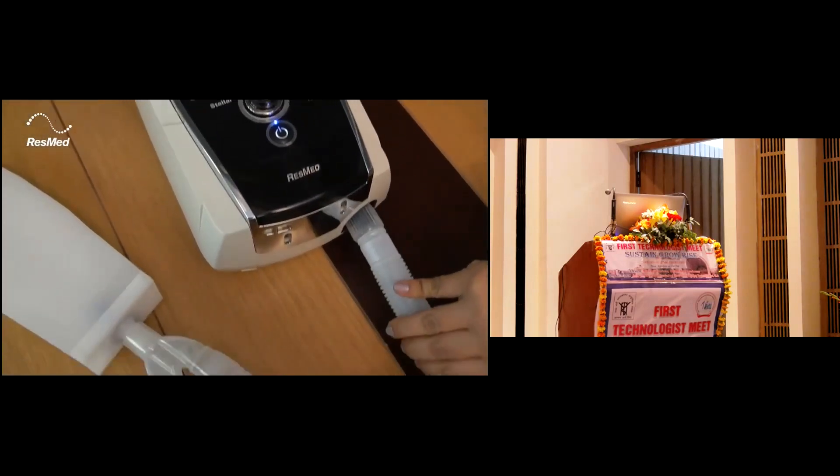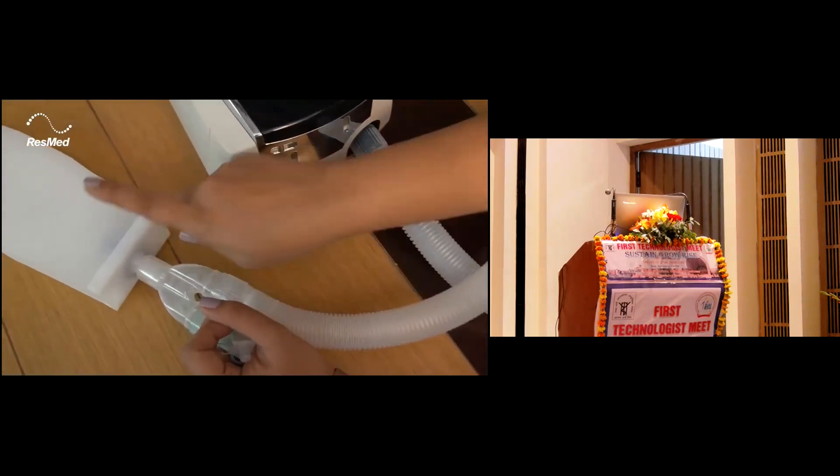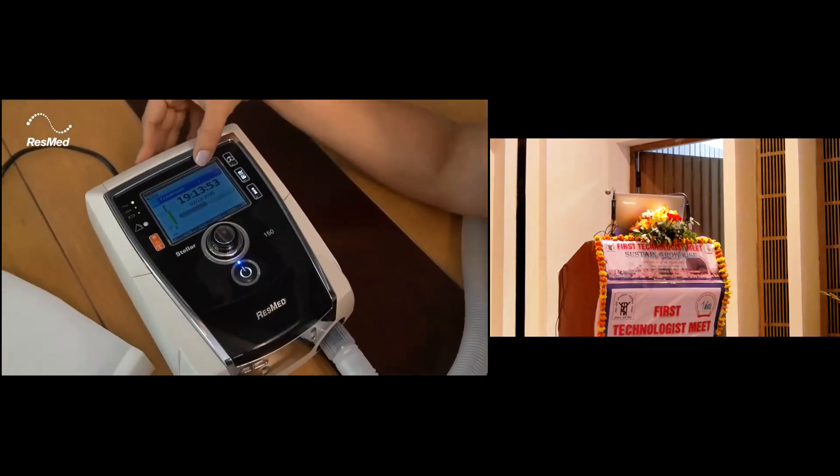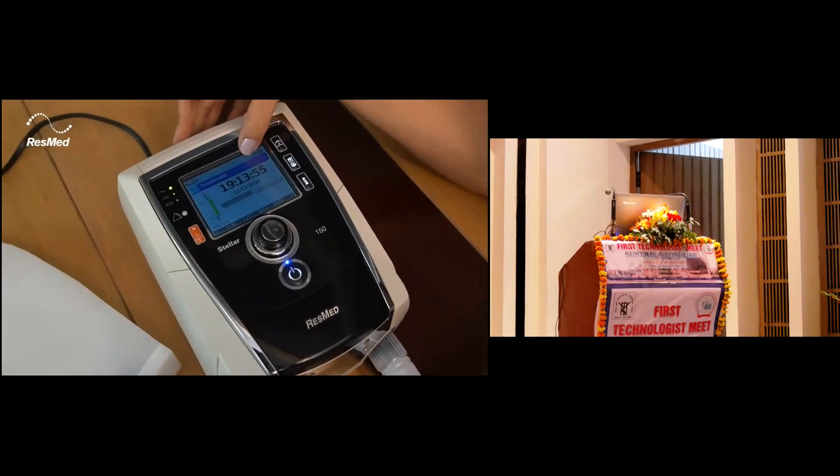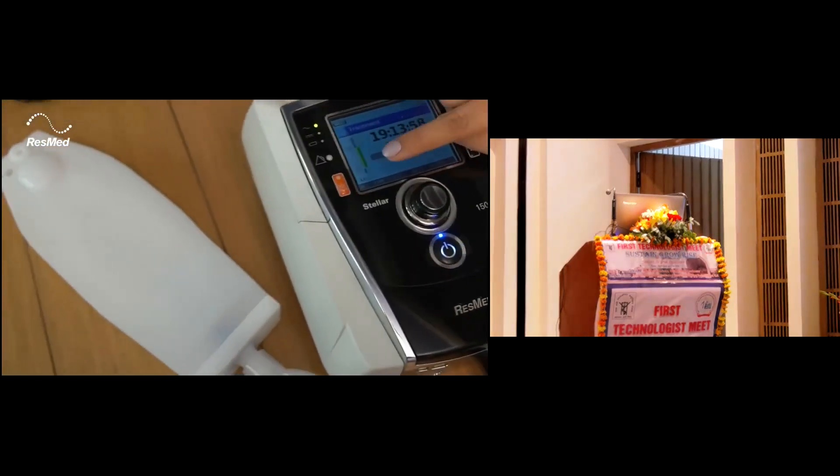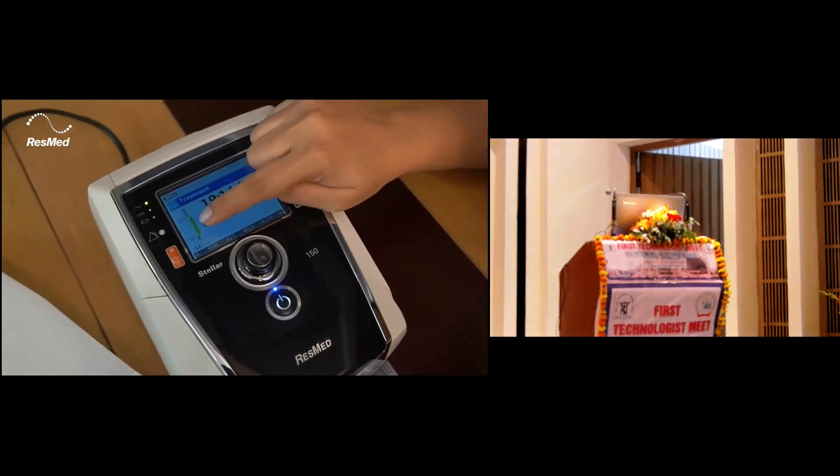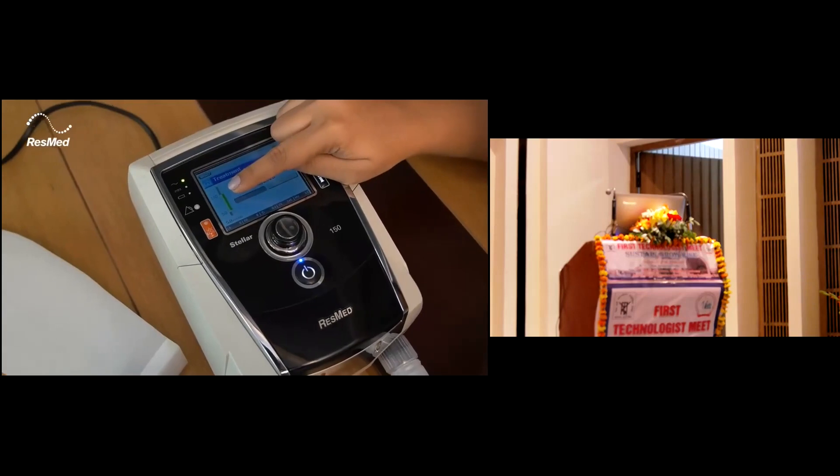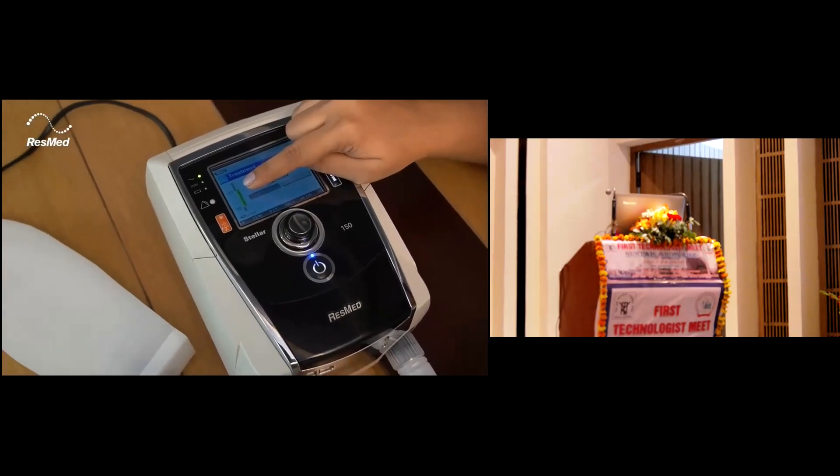Over here you can see I have connected a single limb ventilator to the test lung. We can see we had put the patient on program 1 and in the ST mode. As we had done the settings, you can see the pressure bar over here with EPAP of 5 and IPAP of 13 cm of water.